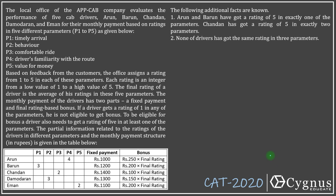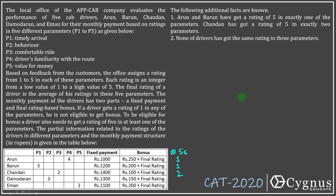Some additional information is also given. Arun and Barun have a rating of five in exactly one of the parameters. Chandan has got a rating of five in exactly two parameters. So the number of fives: A has 1, B has 1, C has 2, and nothing is given for D and E. Also, none of the drivers has got the same rating in three parameters. As there is not much more information in the caselet, let's go to the questions and solve them one by one.